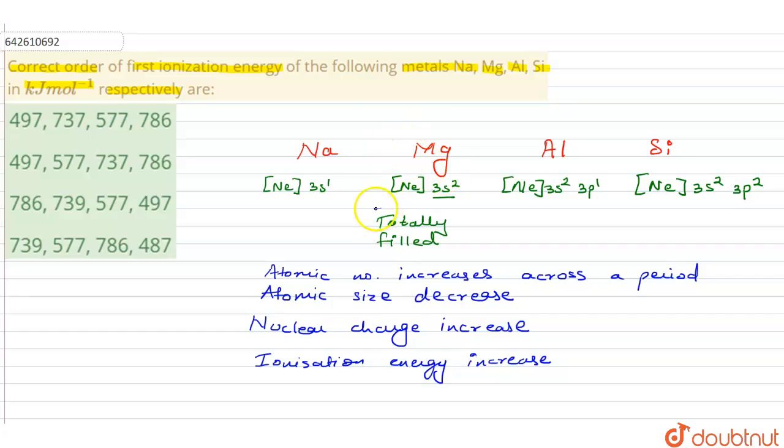Now there is an exceptional case, and the exceptional case lies totally with this fulfilled configuration. Why? Because a totally fulfilled configuration is always observed to be very stable.